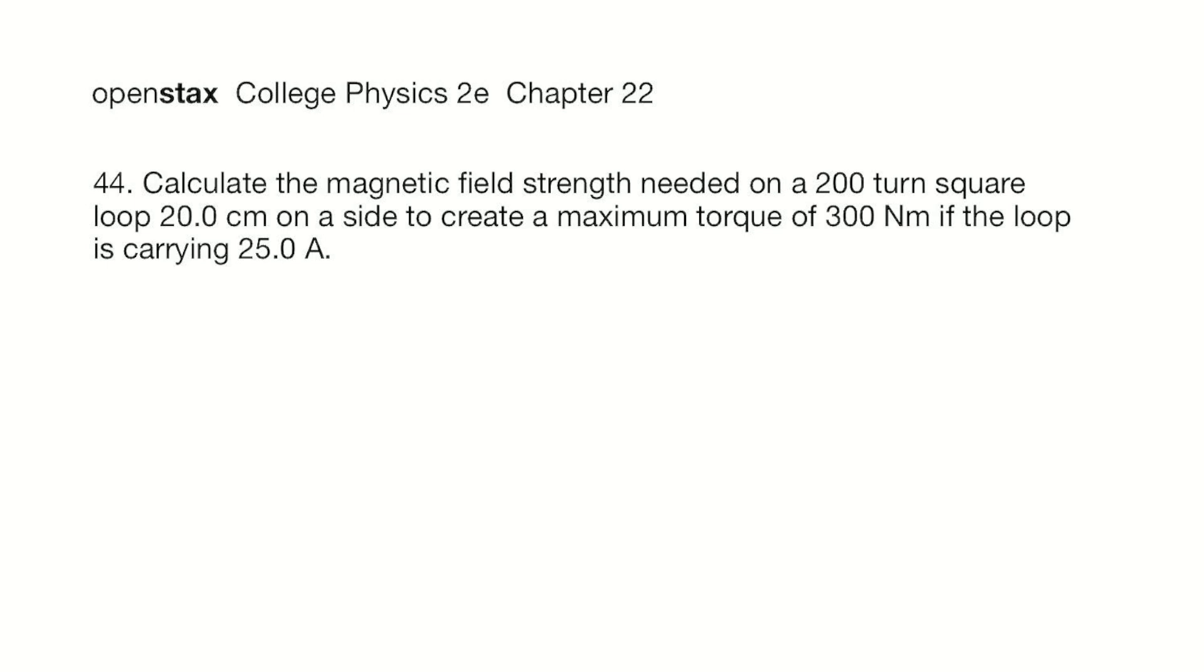In this problem, we need to calculate the magnetic field strength. We have the number of turns. It's a square loop. We know how much each side is, the length of the side. We know it's going to be a maximum torque, and we know the current. So let's start with making a list of what we know.